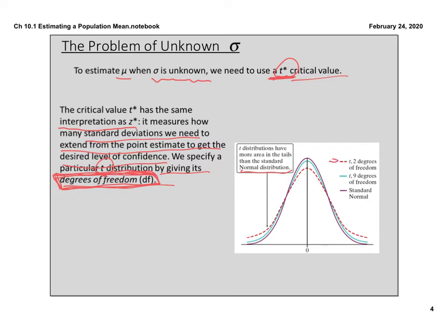You can see the red dashed line of the t* — it doesn't peak quite as high in the middle and it fans out a little bit more on each tail. So the degrees of freedom is what we're going to talk about and where you find it. It's not a hard thing to find. Just know that we have to do this in order to widen the interval because z* doesn't give us enough when we have an unknown standard deviation.